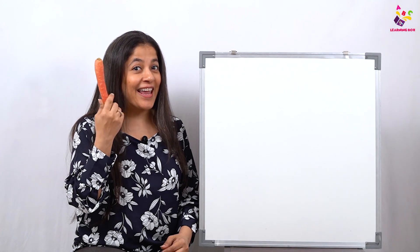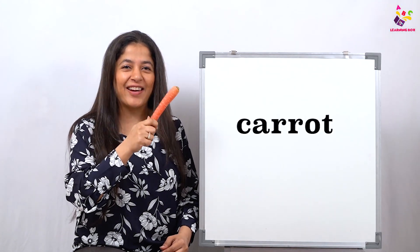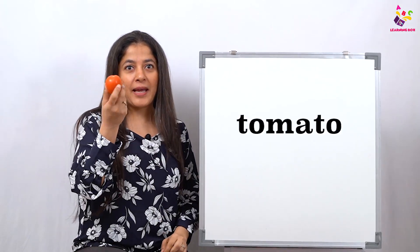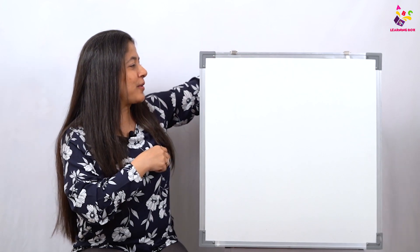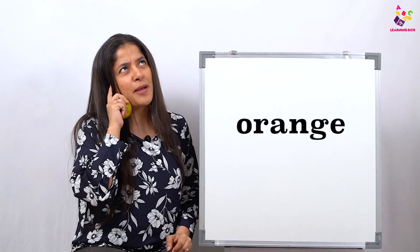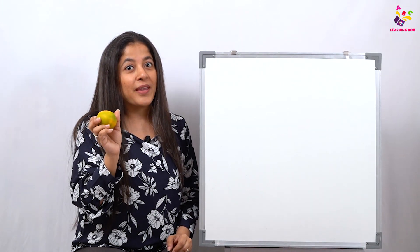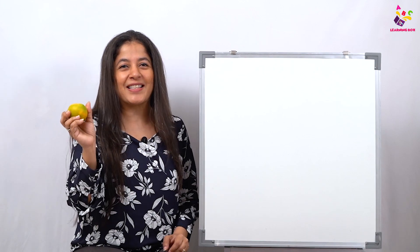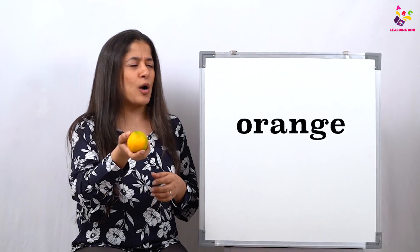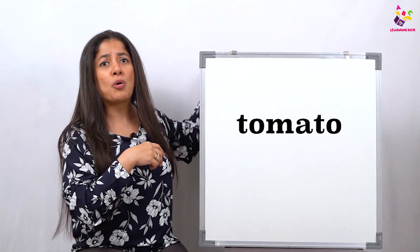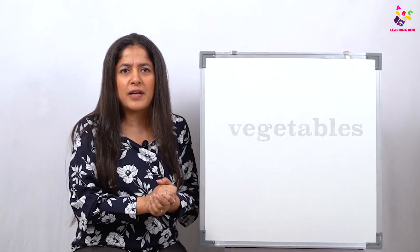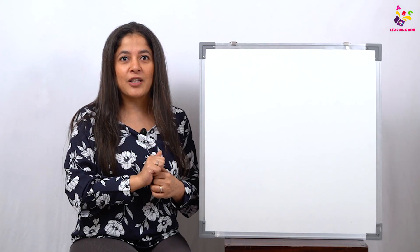Look what I have here — healthy, healthy carrots! And let's see what more I have — tomato! And what do I have here — orange! Do you all remember what orange does? An orange a day keeps all the virus away! And tell me something — from where do we get all these: orange, tomato, carrot? From where do we get all these fruits and vegetables?